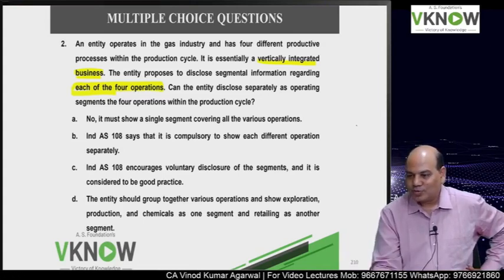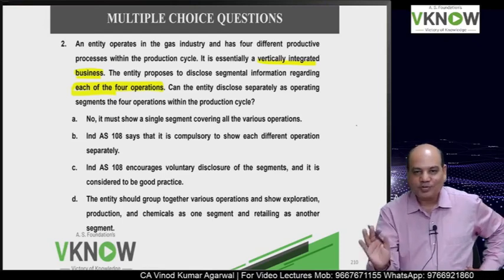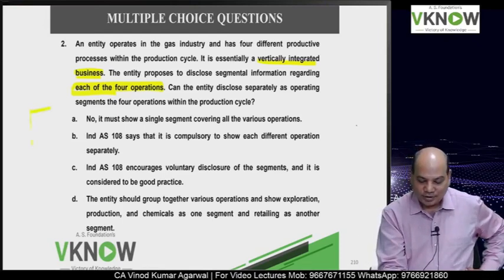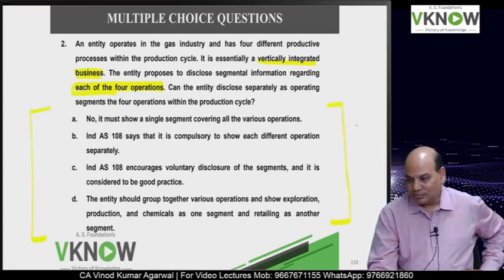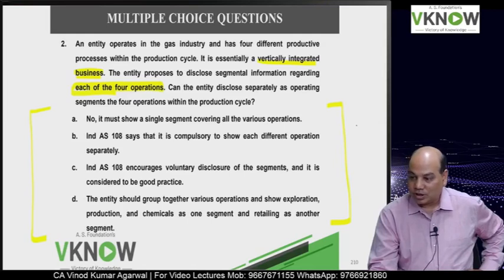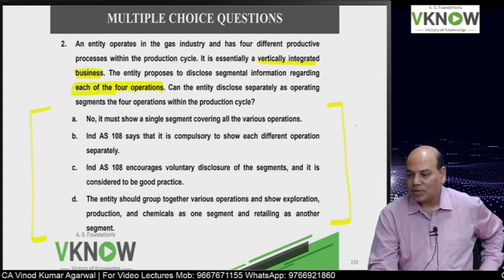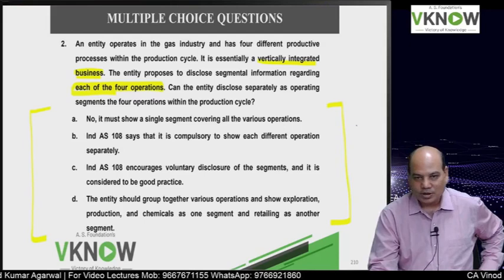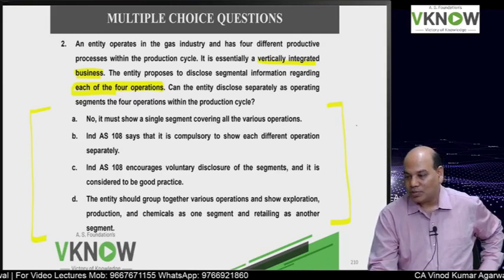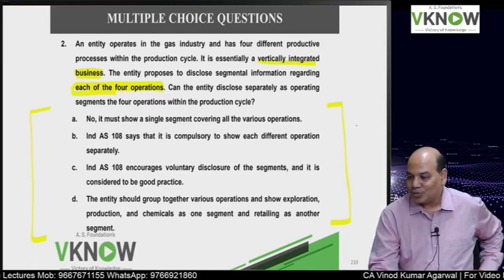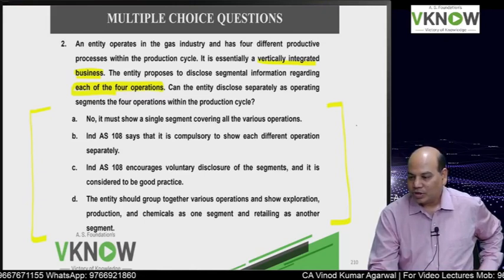You have four choices. Option A: No - it must show a single segment covering all operations. Option B: IND AS 108 says it is compulsory to show each different operation separately. Option C: IND AS 108 encourages voluntary disclosure of segments and it is considered good practice. Option D: The entity should group together various operations and show exploration, production, and chemical as one segment and retailing as another segment.